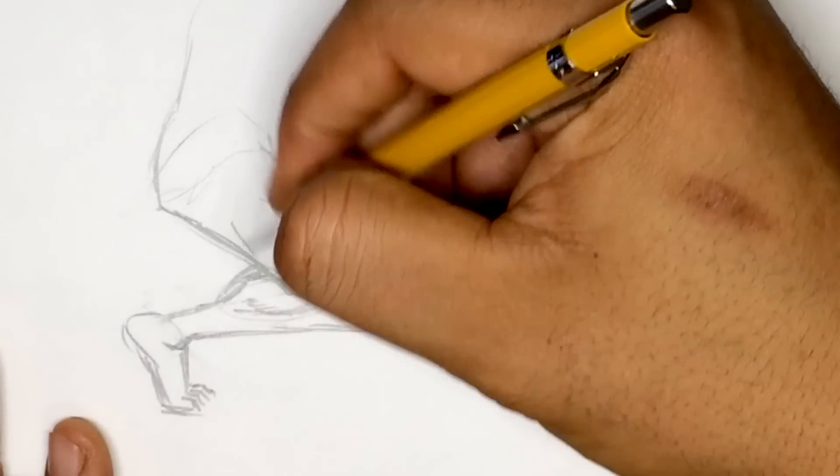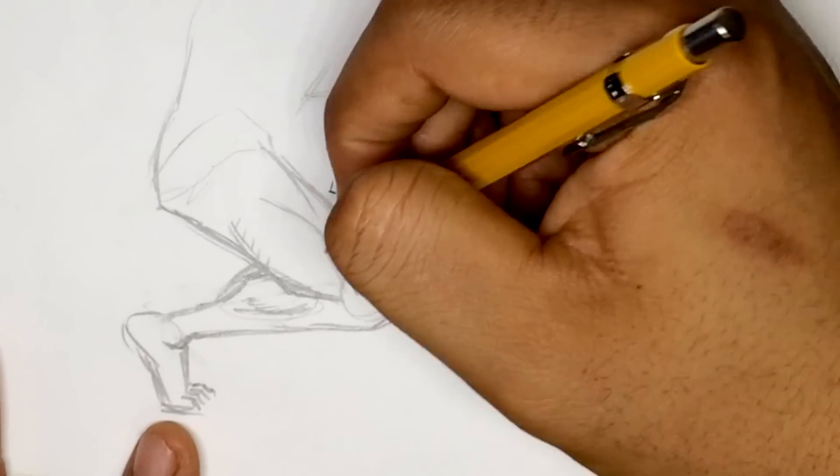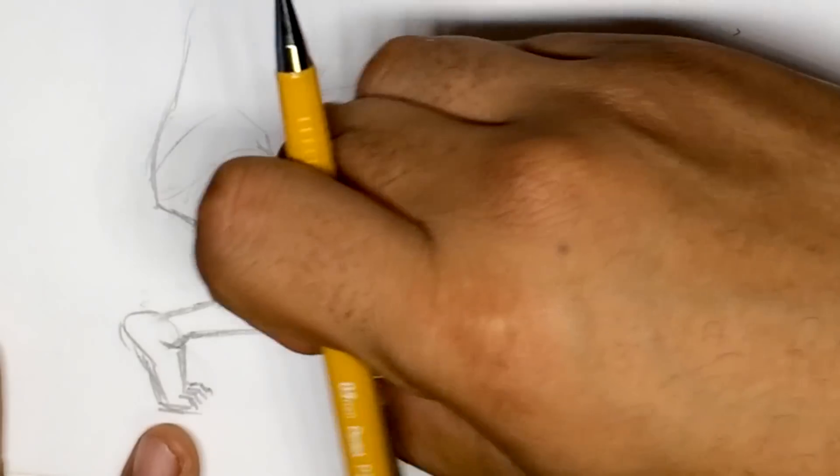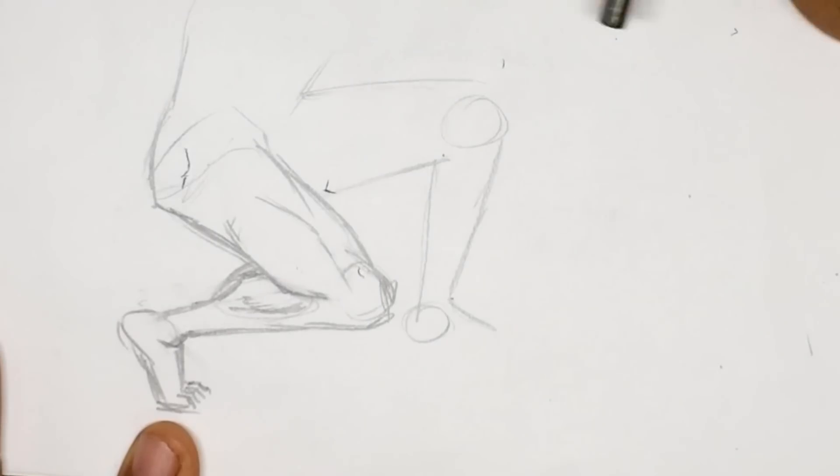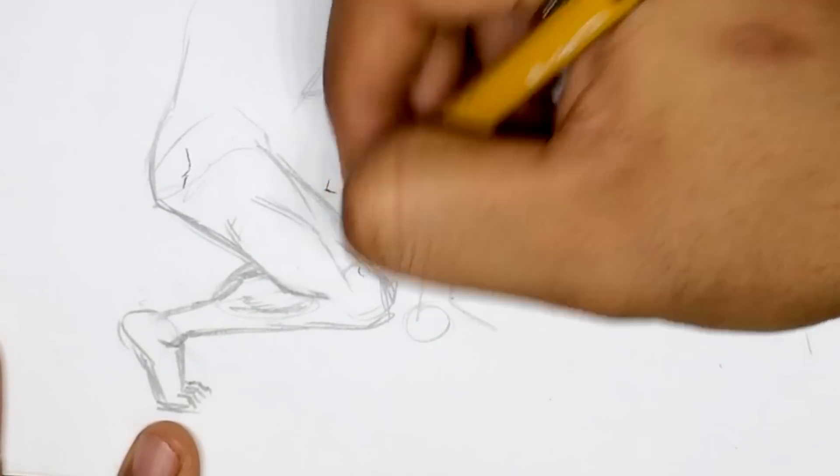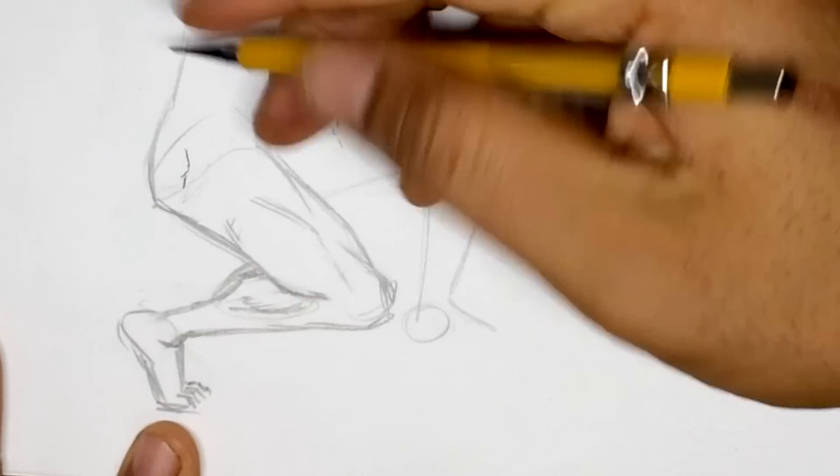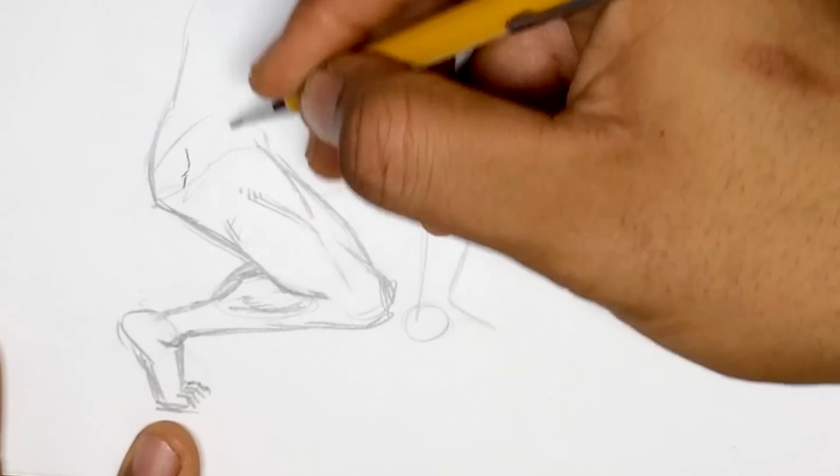When the leg is bent this way, what parts of the body show any kind of muscle definition, at least for simplistic cartoon anime manga style. Nothing too realistic, but realistic enough where the foundation is from real drawing.